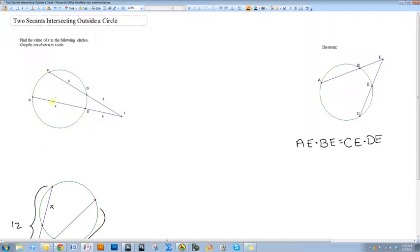In this example here, if I want to find x, then I can just say RT, which is the length of that entire secant, times ST, is equal to PT times QT.